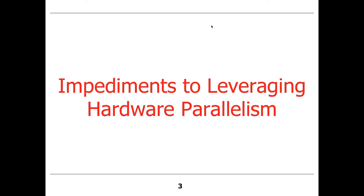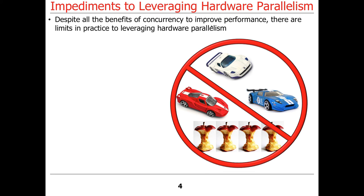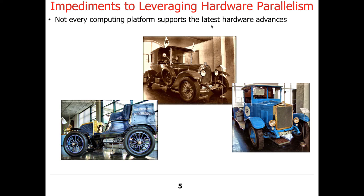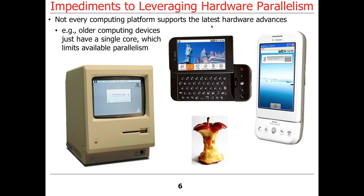But as always, it's not that simple. There are things you have to know in order to make your programs run faster in a multi-core environment. Despite all the improvements in hardware, one limitation is that not every computing platform supports the latest hardware advances. There are plenty of older devices — older desktops, laptops, smartphones, tablets — that only have a single core, which means available parallelism is restricted. In general, if you're stuck with an older device, parallelism is not going to be easy to extract.